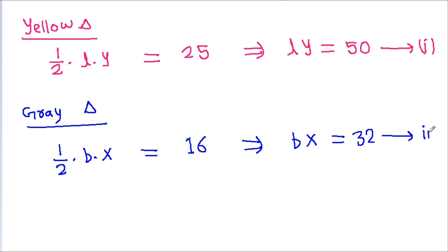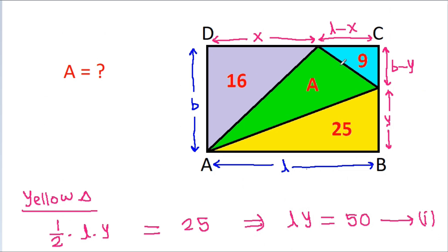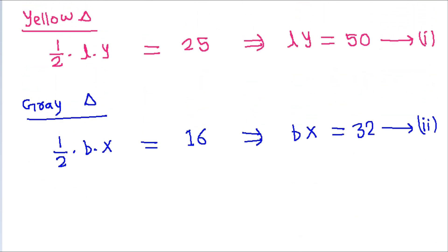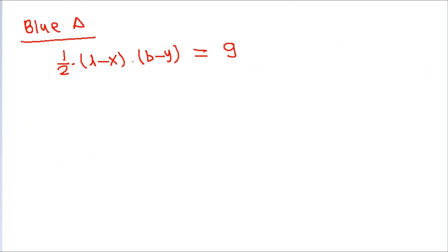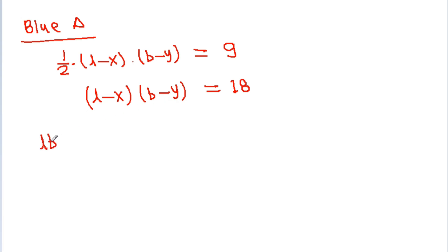Now if we consider the blue triangle, its area will be half times (L minus X) times (B minus Y), which equals 9. So (L minus X)(B minus Y) equals 18. Expanding: LB minus LY minus BX minus XY equals 18.